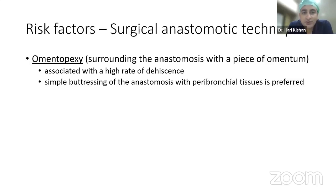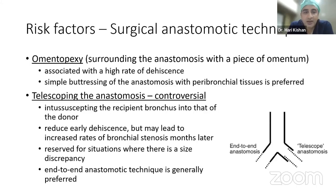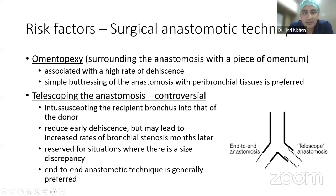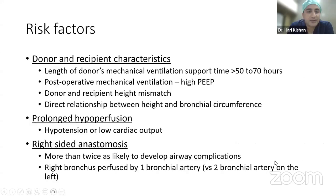Previously, surgeons performed omentoplexy — wrapping omentum around the anastomosis — but this showed high rates of dehiscence and is largely abandoned. Telescoping anastomosis, where the donor bronchus is placed into the recipient bronchus, is more likely to be a risk factor for postoperative airway complications like stenosis and dehiscence. Most current recommendations favor end-to-end anastomosis. Patients on prolonged mechanical ventilation before surgery are also at high risk for airway complications.